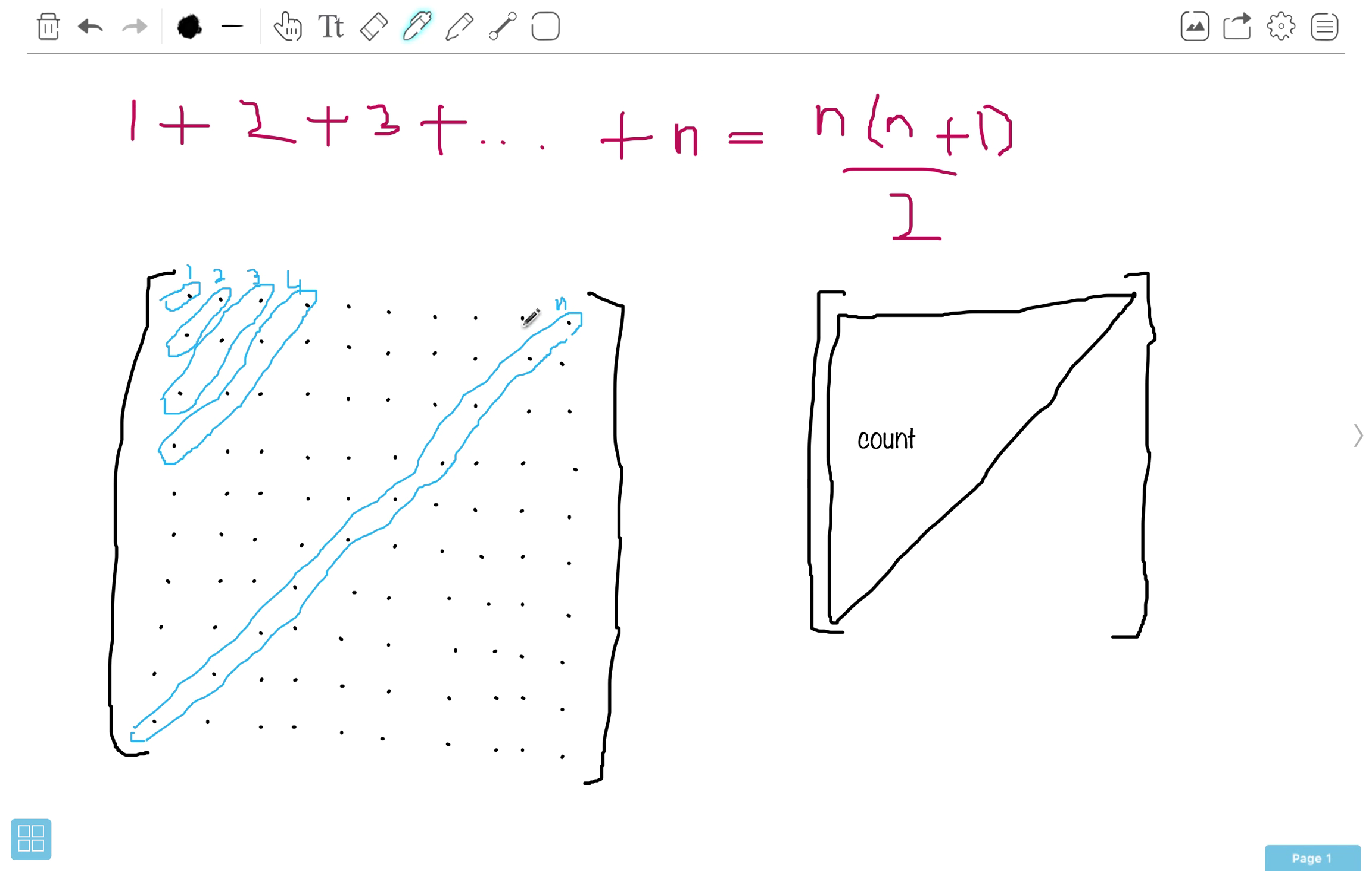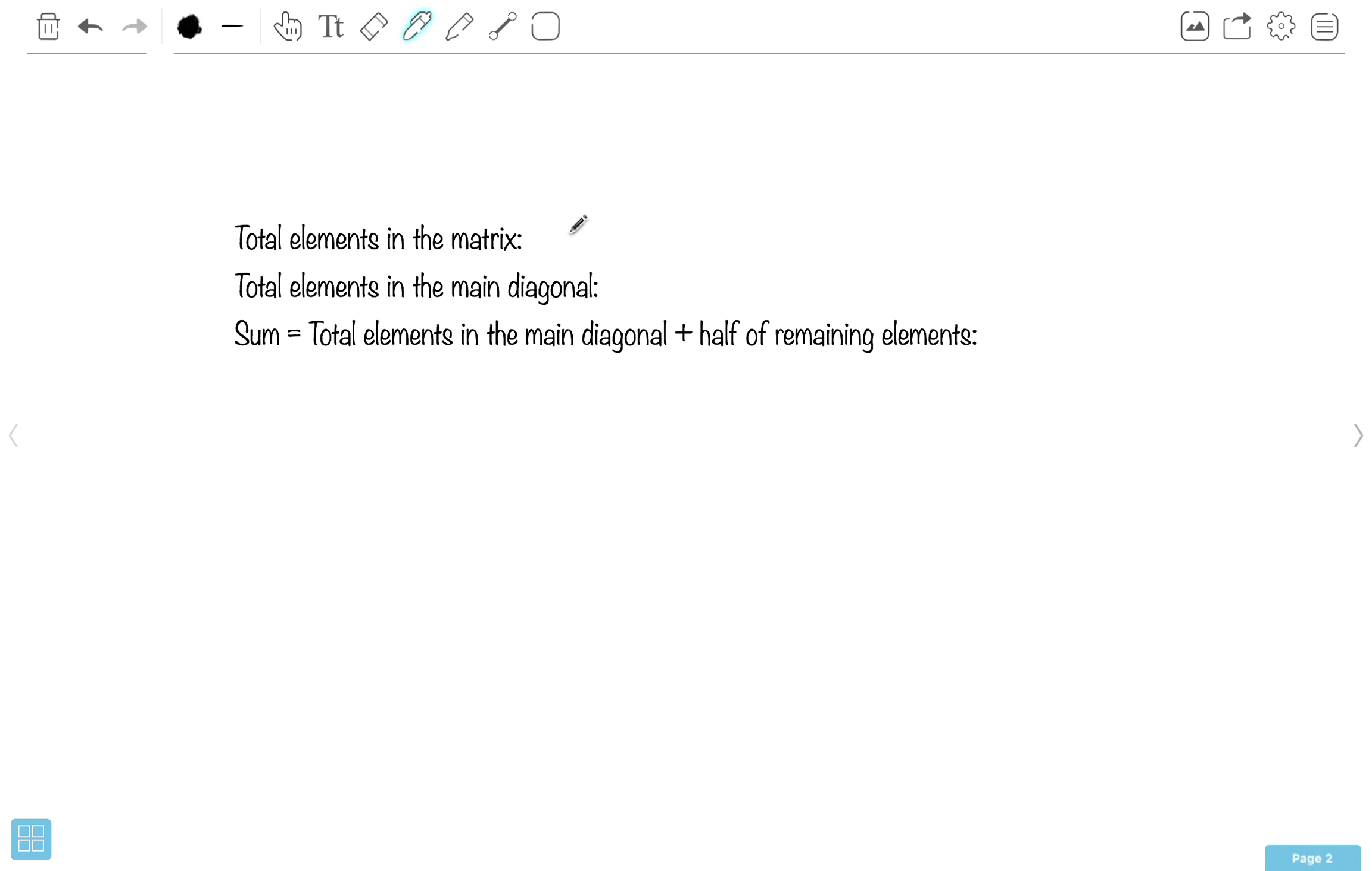Total elements in the matrix should be n squared, and what should be the total elements in the main diagonal? This is n.